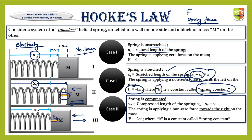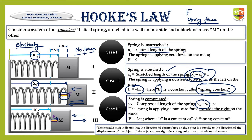x is defined as the extra stretch or compression in the spring — not the new length, but the difference between the new length and the original length. The minus sign indicates that the direction of spring force is opposite to the direction of displacement of the object. When x is in one direction, the spring force is in the opposite direction — that is Hooke's Law.